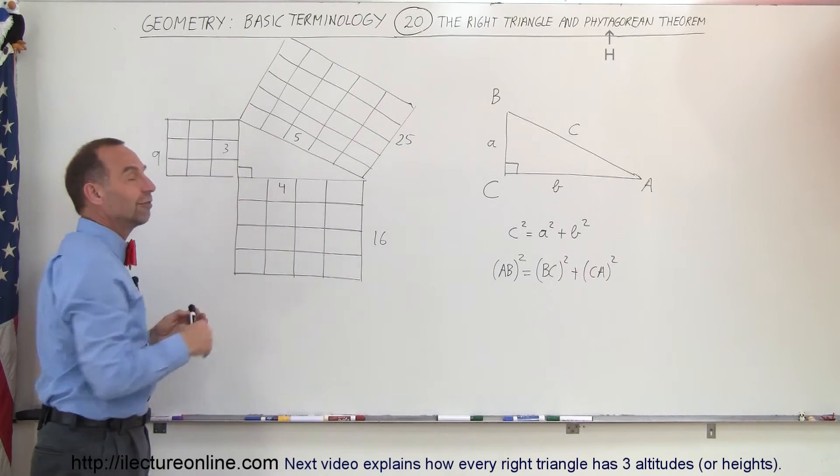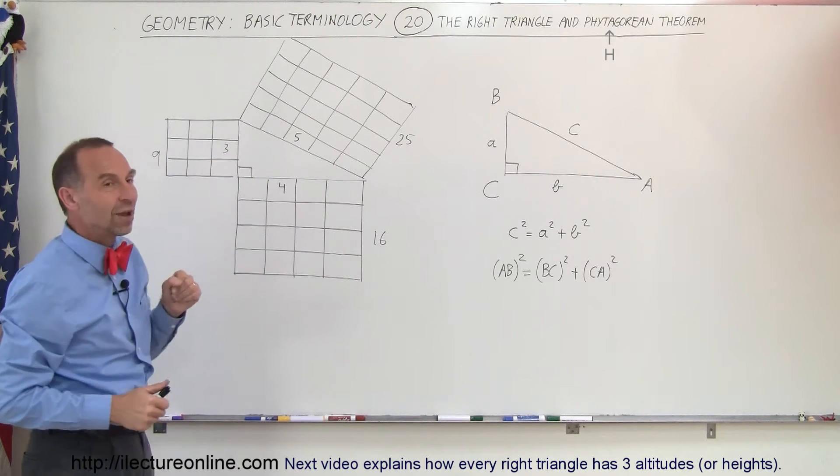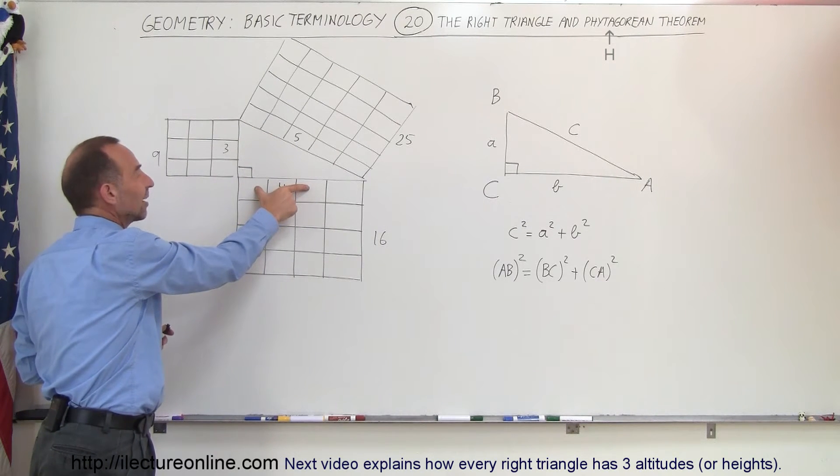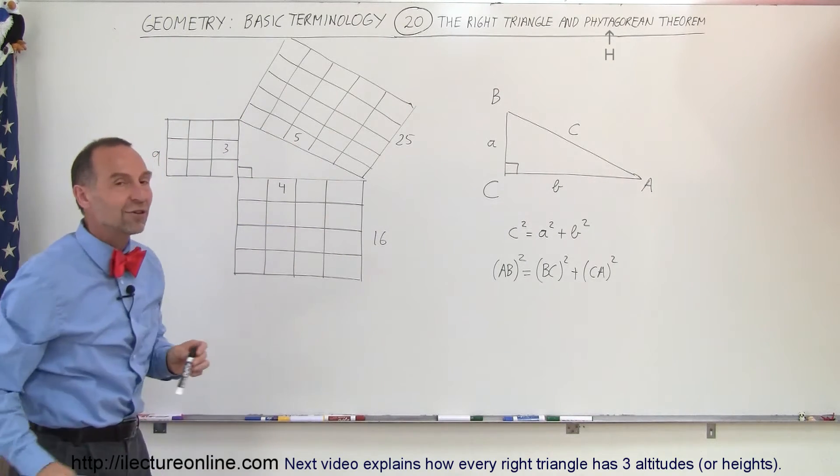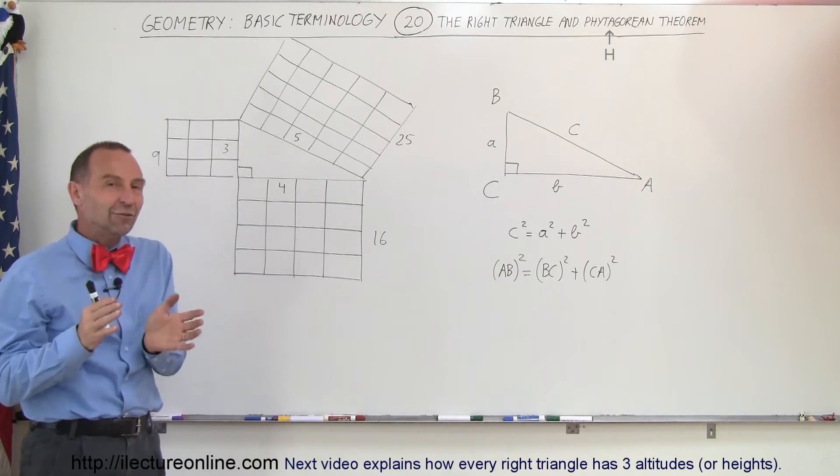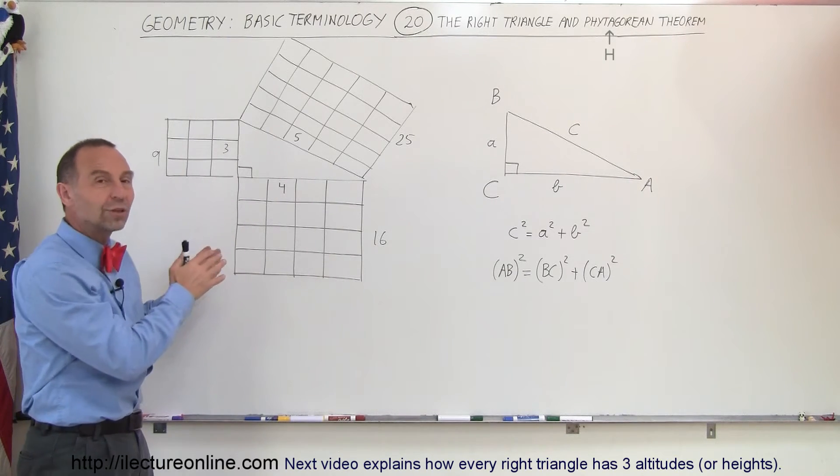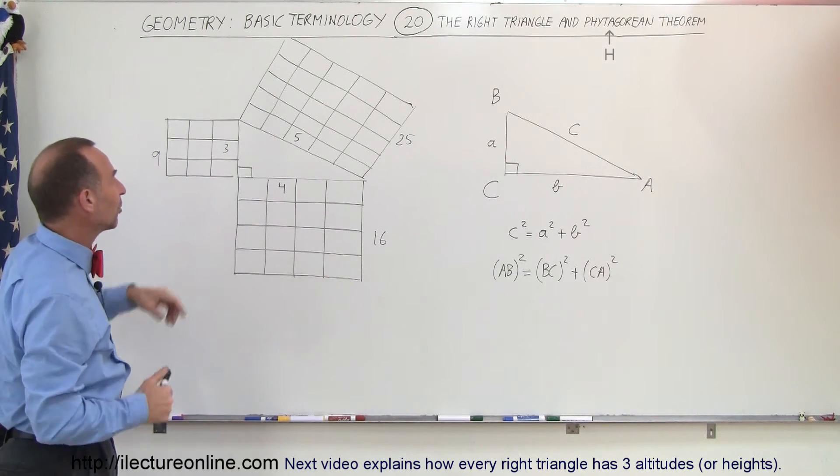A really neat way to graphically show that that is indeed true is we have a triangle here called the famous 3-4-5 triangle, meaning the length of one side is three units long, the length of the second side is four units long, and the length of the hypotenuse is five units long. Now, it doesn't have to be that way to prove the Pythagorean theorem, but it's easy to show it this way because of nice even numbers.